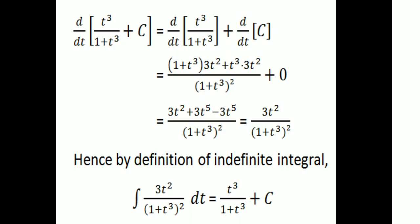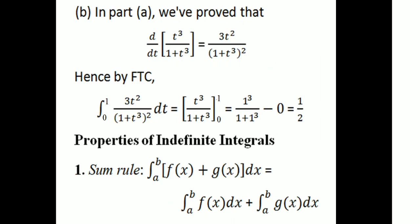That gives us: (1 plus t cubed) times 3t squared minus t cubed times 3t squared, all divided by (1 plus t cubed) squared, plus zero since the derivative of a constant is zero. This simplifies to 3t squared plus 3t to the fifth minus 3t to the fifth, divided by (1 plus t cubed) squared, which equals 3t squared divided by (1 plus t cubed) squared. Hence, by the definition of the indefinite integral, the integral of 3t squared divided by (1 plus t cubed) squared dt equals t cubed divided by (1 plus t cubed) plus c.